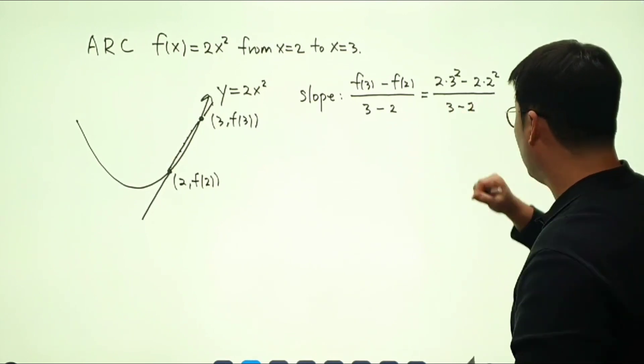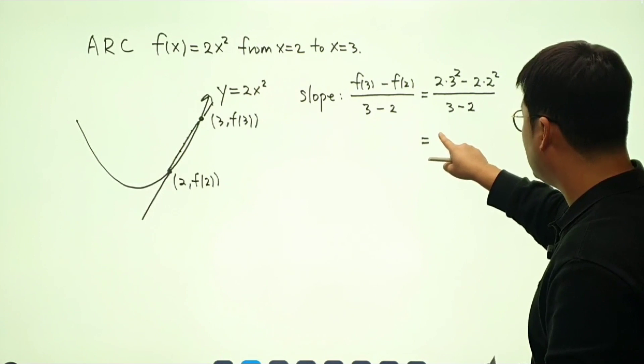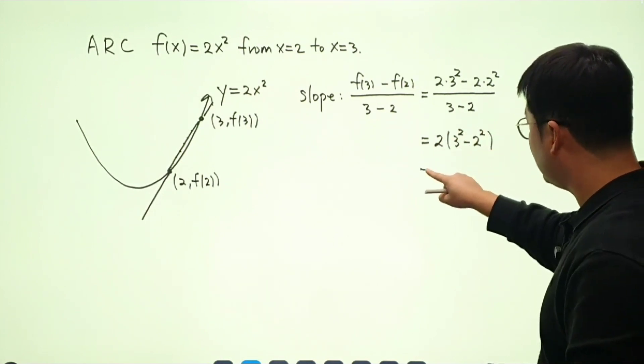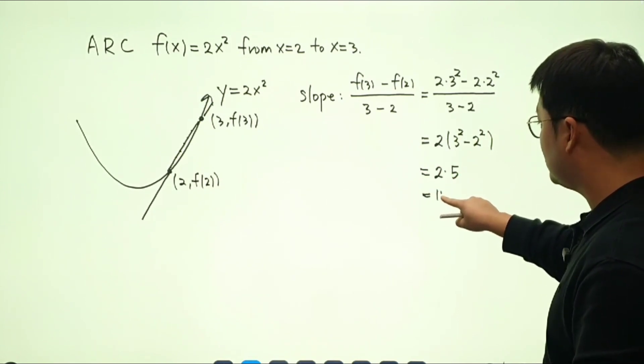So there's no point of going over 3 minus 2. All we need to do is just to compute the upper part, 3 squared minus 2 squared. And you can check that that's going to be 2 times 5. So this becomes 10.